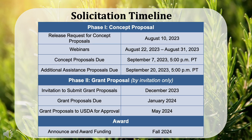As noted in the beginning, the timeline for the entire solicitation process can be found in the RFCP. Please note that concept proposals are due on Thursday, September 7th at 5 PM Pacific Time, and that late submissions will not be accepted. As a reminder, the Additional Assistance Program has a separate submission deadline. Applicants will be notified in December whether they are invited to Phase 2, and will have approximately one month to submit grant proposals. CDFA will submit proposal recommendations to the USDA in May, and we anticipate announcing and awarding funds in the fall of 2024.